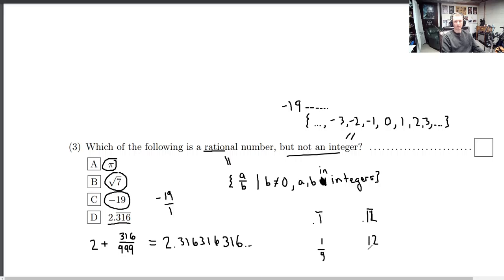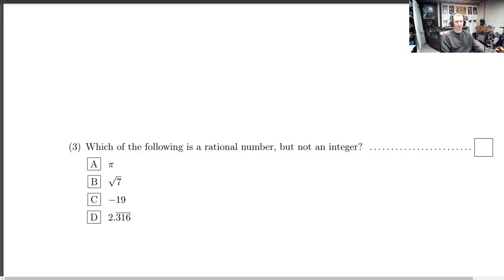For example, 0.1 repeating is the same as 1 ninth. 0.11, or let me write it like this, 0.12 repeating is equal to 12 over 99. And you can keep doing this for any sort of repeating number. Okay, that was a quick short video. But that's the first three problems, and I hope that helps. I'll be back in a little bit for the next one.